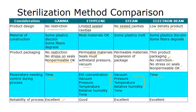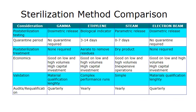For reliability, gamma has excellent reliability, as does electron beam and steam. Ethylene oxide is good — there are biological indicators which are put in each pallet to ensure that the product has been sterilized. So there is good reliability from ethylene oxide, but not excellent.